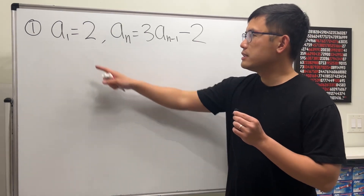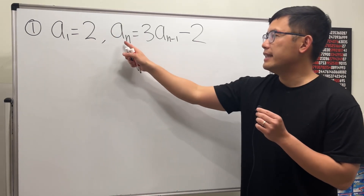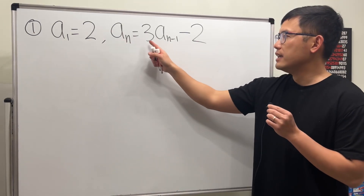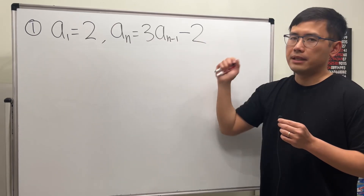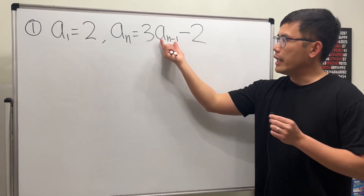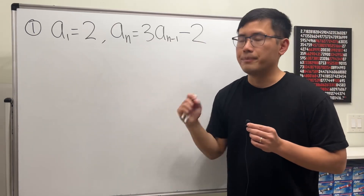The first one is a1 is equal to 2, and then an equals 3 times a(n−1) minus 2. Remember, a(n−1) means the previous term.